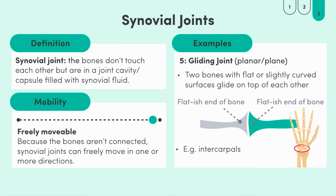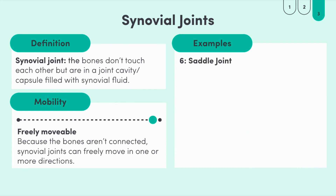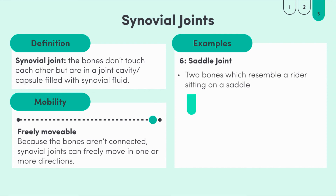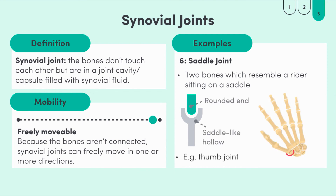The final type of synovial joint is the saddle joint, named after both its structure and its movement. The movement in saddle joints resembles a rider on horseback who can shift in several directions — the saddle is the base of the joint and the rider sits on top. Our thumb joint is a saddle joint: the base of the thumb is the saddle and the thumb can move in two planes of movement. Saddle joints provide more stability to the bones compared to other similar joints because of their unique structure.